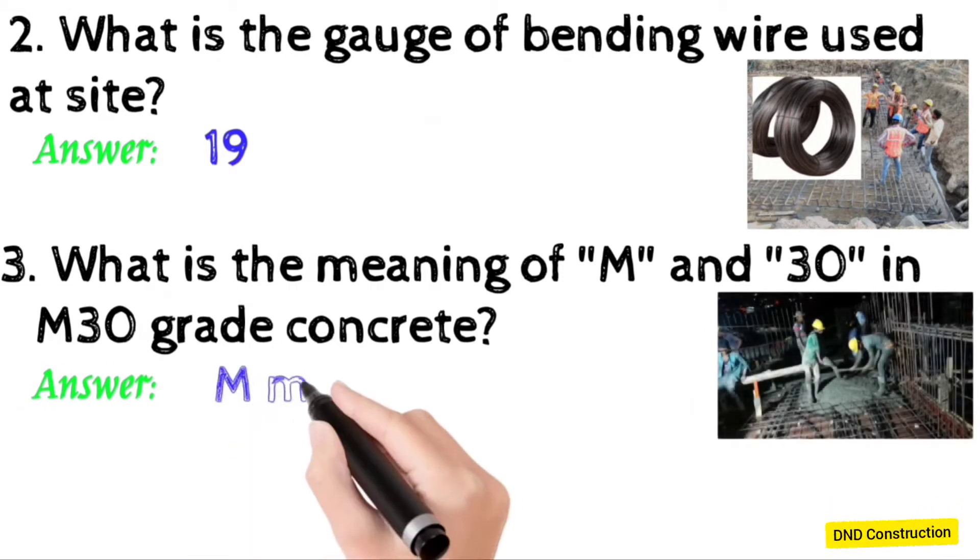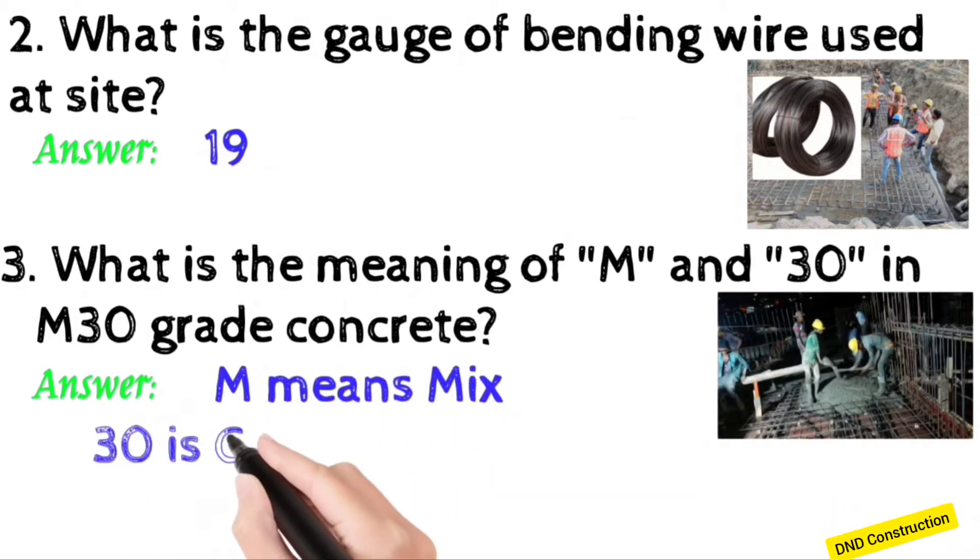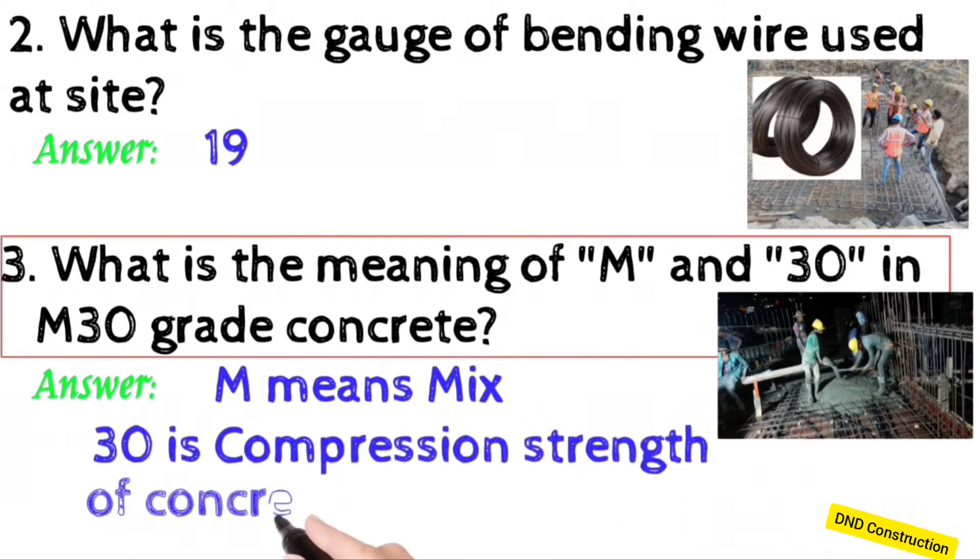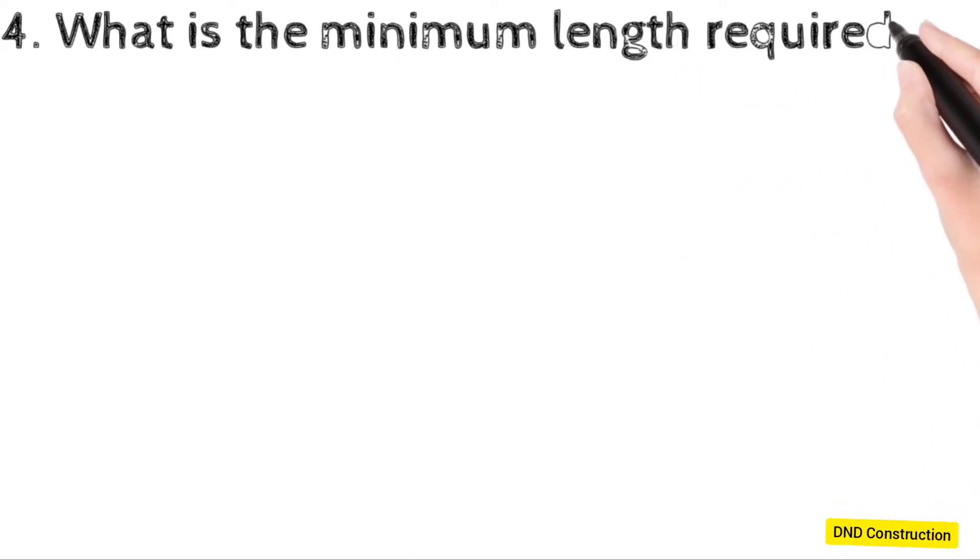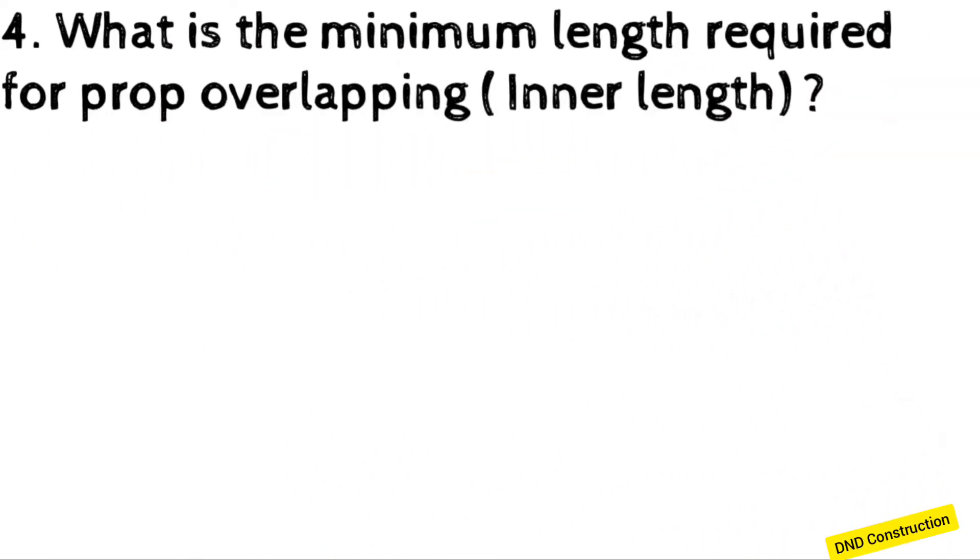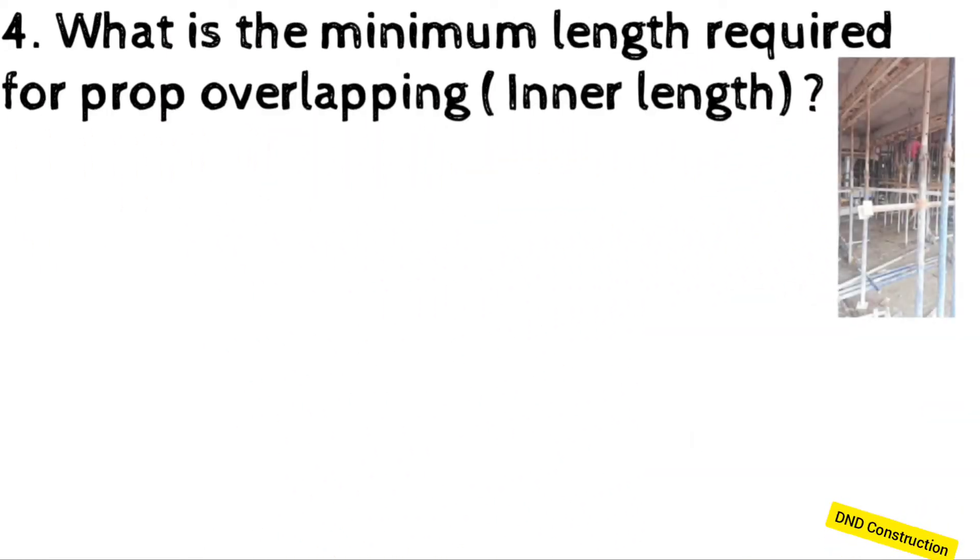M means mix, and 30 is compressive strength of concrete at 28 days in Newton per mm square. What is the minimum length required for prop overlapping, inner length?